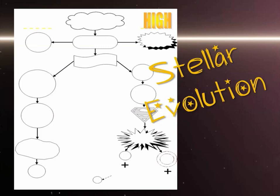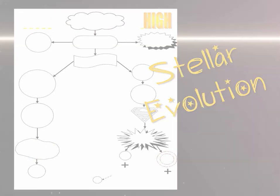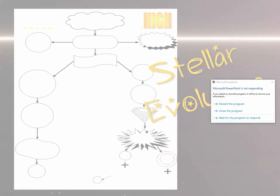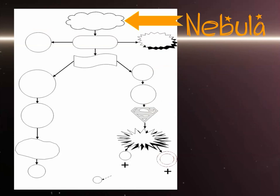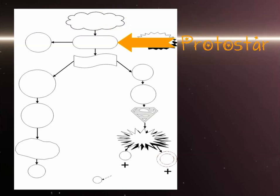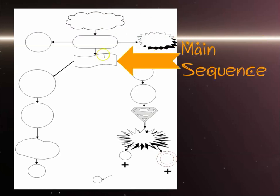Now looking at the high mass side of stellar evolution — page 36 of your notebook. Everything begins with the nebula, then you have protostar, then main sequence as you are scintillating, fusing your hydrogen into helium.